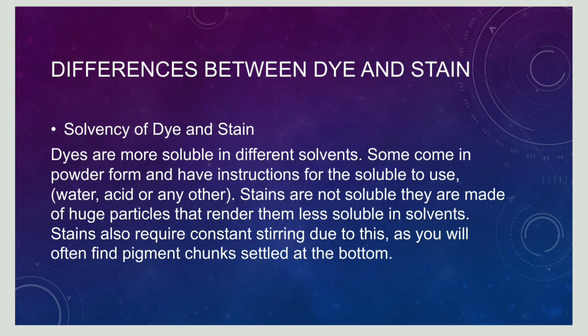Now let us discuss the differences between a dye and a stain. First, based on solvency: dyes are more soluble, whereas stains are less soluble in different solvents. This is because dyes have smaller molecules, whereas stains have larger particles. Hence, stains are less soluble and get soluble only under constant stirring. You may often observe that pigment particles are frequently found settled at the bottom of the container.